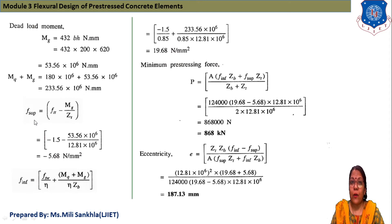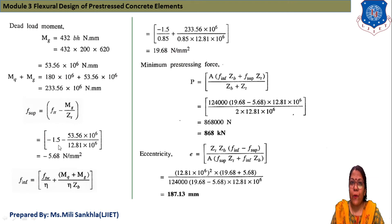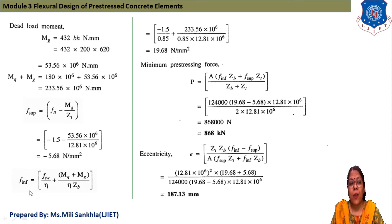We find the top fiber stress at transfer: f_sup = f_tt − M_G / Z_t. With f_tt = −1.5 N/mm², M_G = 53.56 × 10⁶ N·mm, Z_t = 12.81 × 10⁶ mm³, we get f_sup = −1.5 − (53.56/12.81) = −5.68 N/mm².